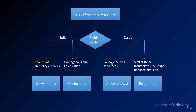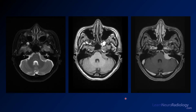Cystic masses include arachnoid cysts, which follow CSF on all sequences, or epidermoid, which will be similar to CSF but not quite and will show reduced diffusion. Keep this in mind when evaluating cerebellar pontine angle lesions.